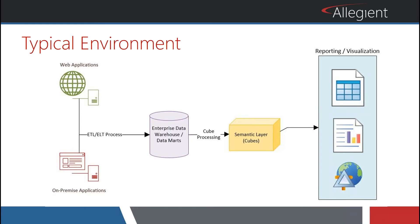To start, let's look at the typical environment. Right now, traditional environments have web applications in the cloud, on-premise applications, and a variety of ETL or ELT processes that eventually bring data into a data warehouse or data mart. Then some kind of semantic layer exists, and then you have your reporting and visualizations. This is your traditional analytical environment, which unfortunately many organizations are still trying to get to. Those that have achieved this are now asking: how can I get my data faster? I want insights sooner. I don't want to wait 24 hours, 4 hours, or even 1 hour for data to make its way from the source application through the data warehouse to the semantic layer and then to reports or dashboards. I want to be as close to real-time as possible.